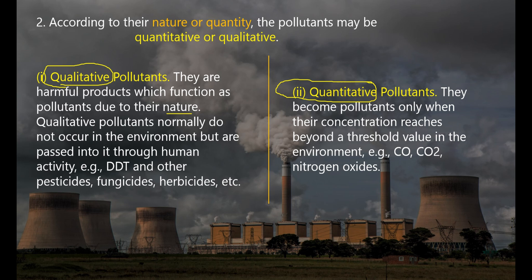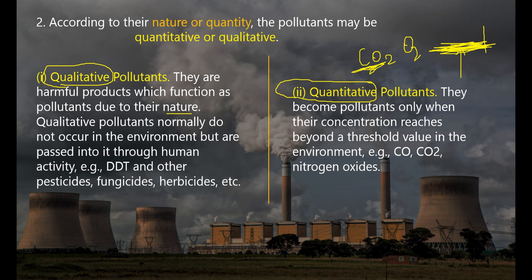Quantitative pollutants are about quantity. Suppose CO2 increases. CO2 is not normally harmful in the human body — oxygen is important for respiration. But when the quantity is more than required and exceeds a threshold level, then CO2 becomes a pollutant. Below the threshold, CO2 is not a pollutant.